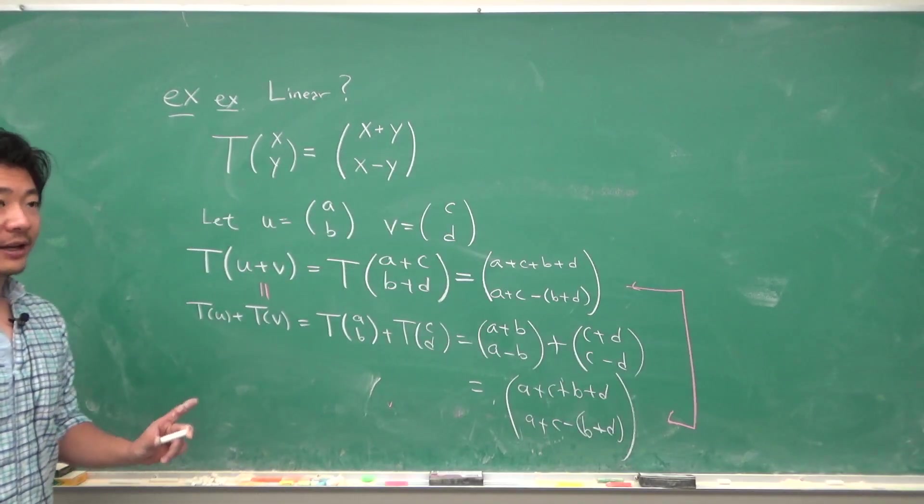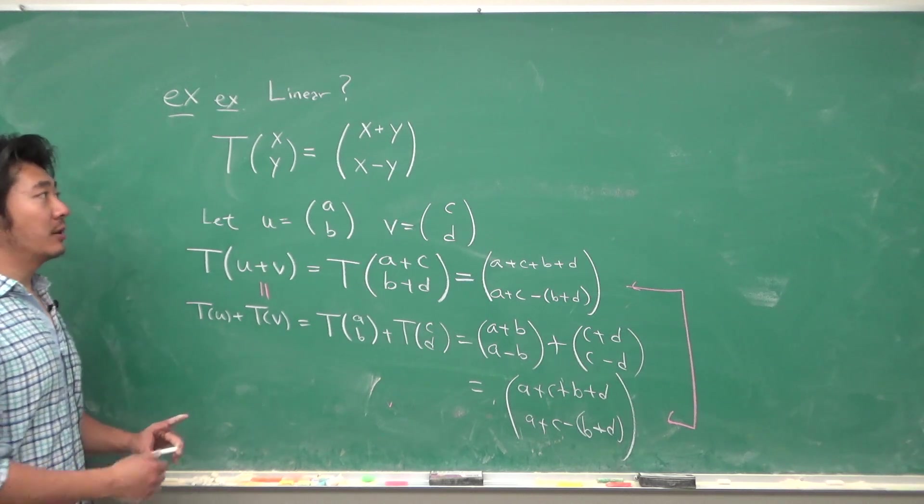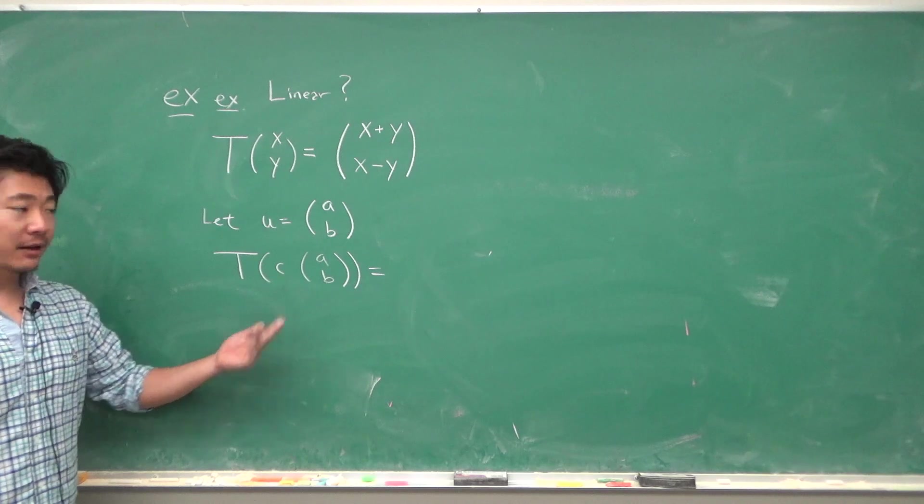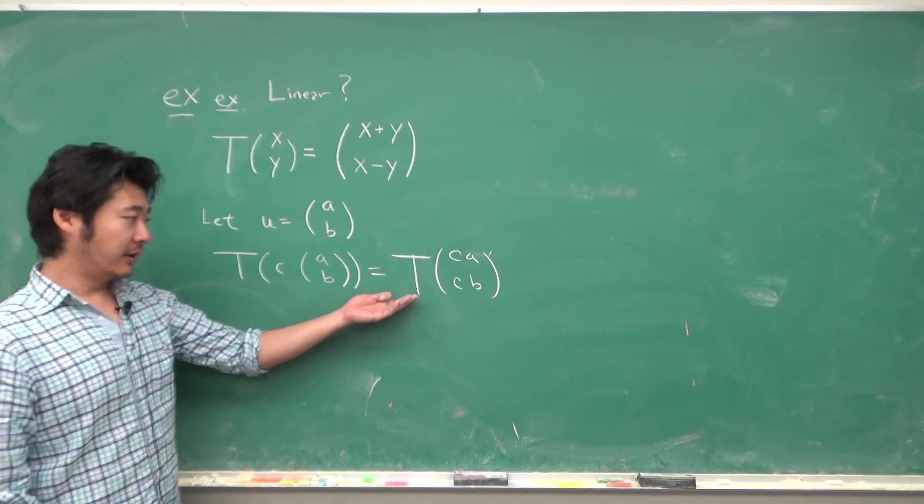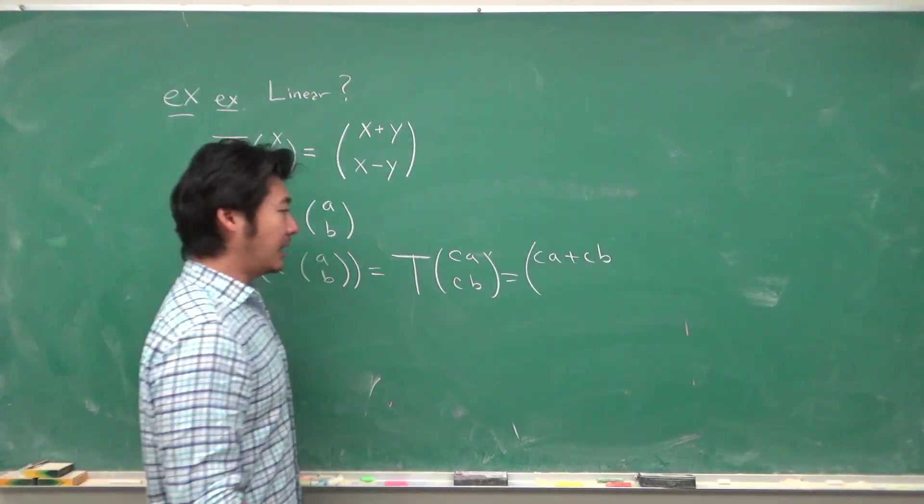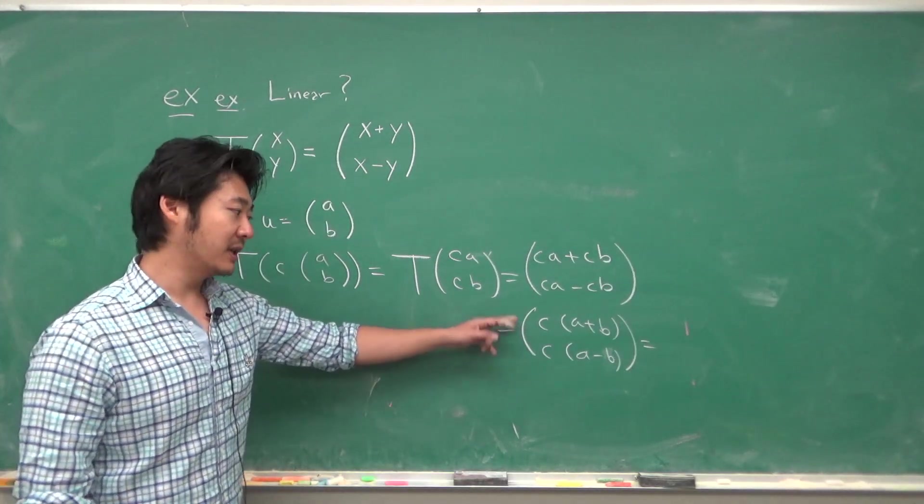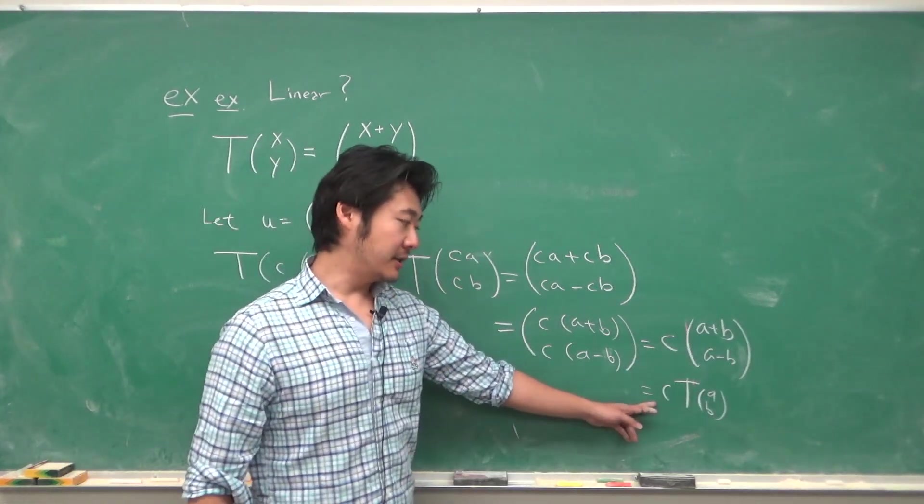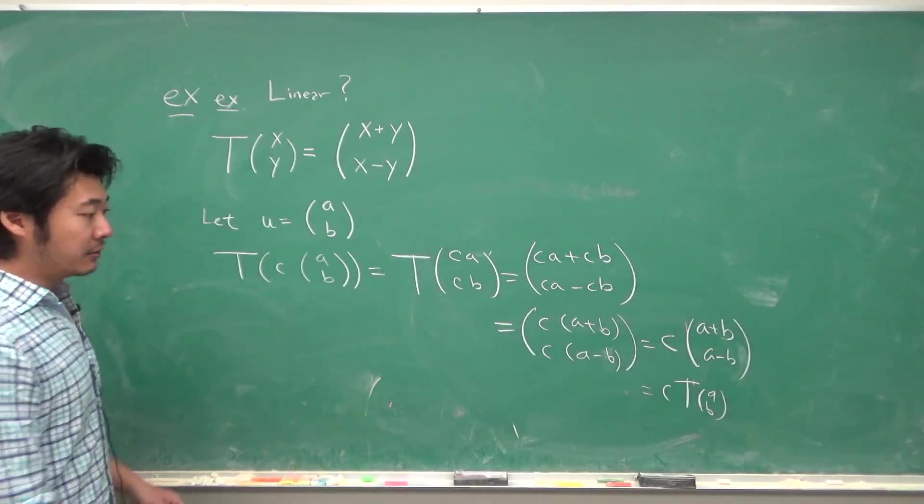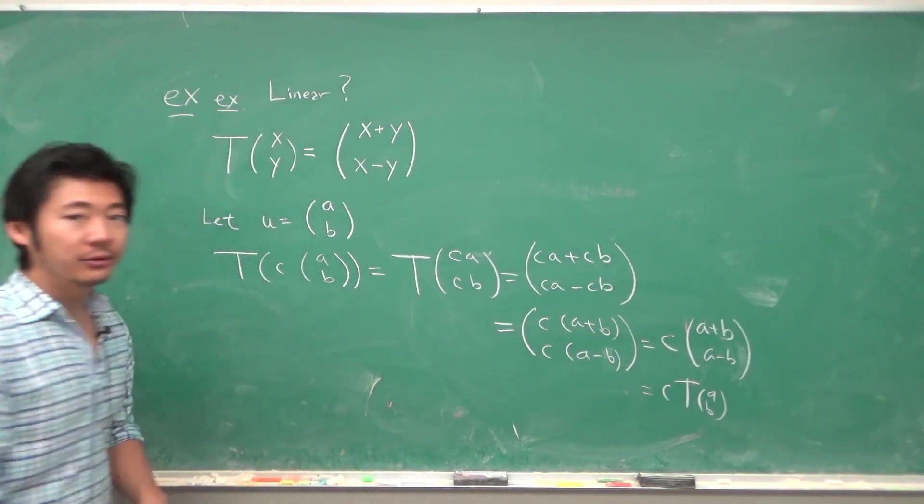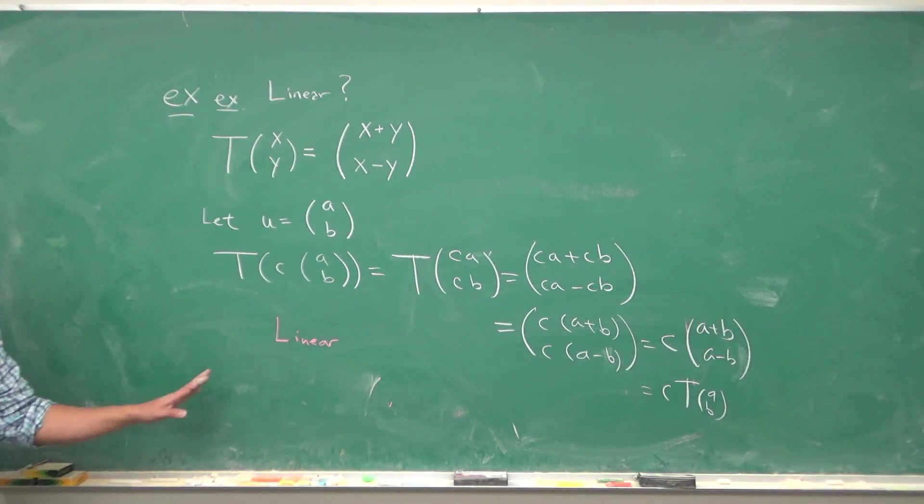Next, we need to check that scalar multiples can move outside of the transformation. So let's see some scalar c. We need to see where this vector will get transformed to. This will go to (ca+cb, ca-cb). But since c is being multiplied to both components, we can factor it outside. But this is simply c times T(a,b). And so it's linear with respect to scalar multiplication. So both properties hold, and so the transformation is linear.